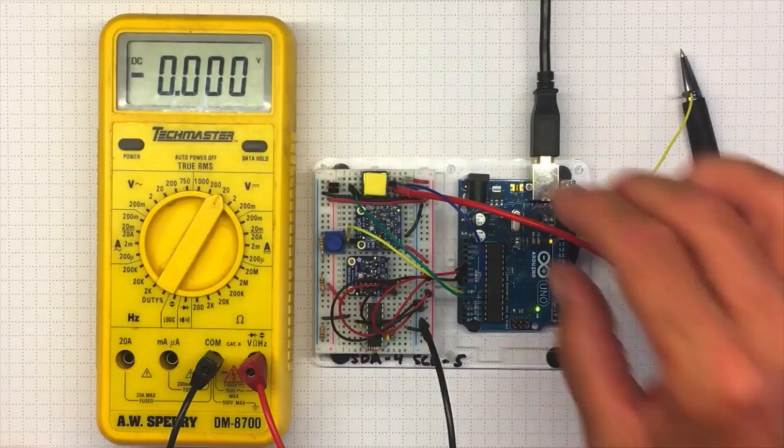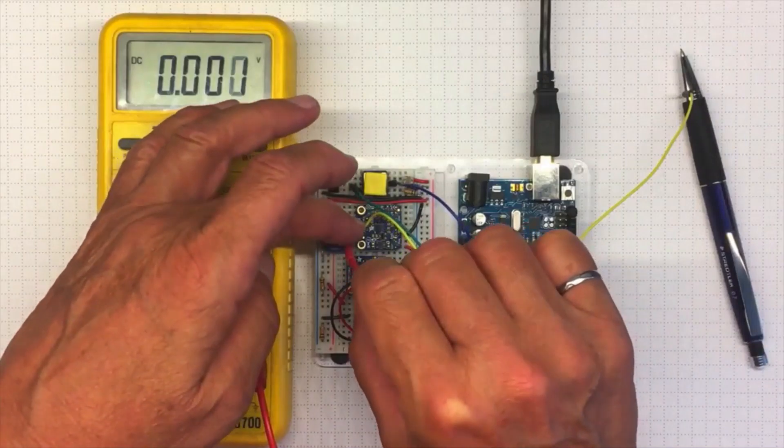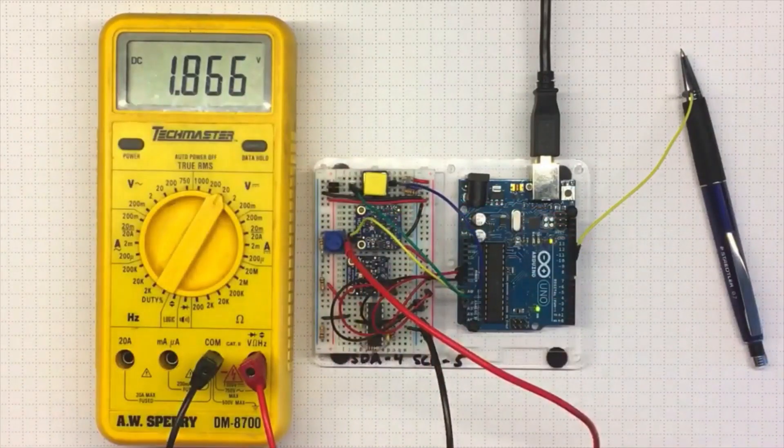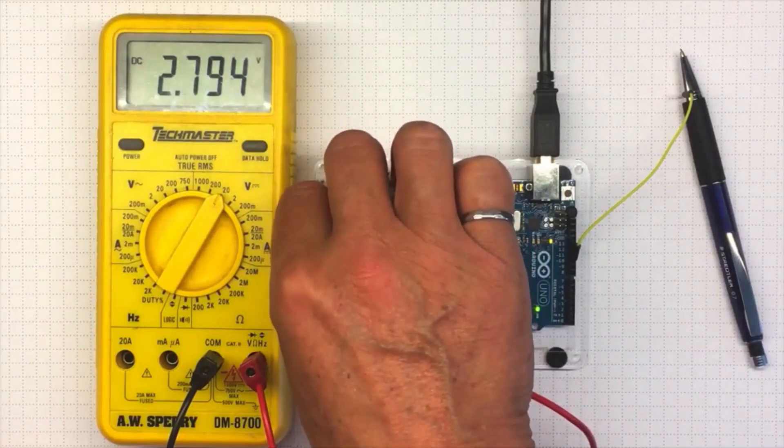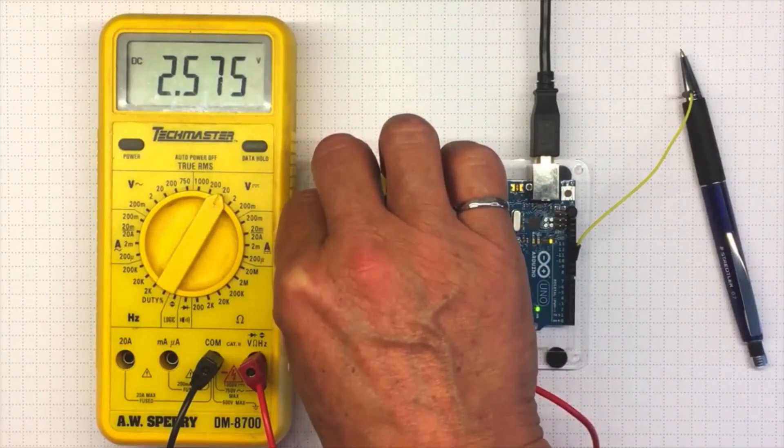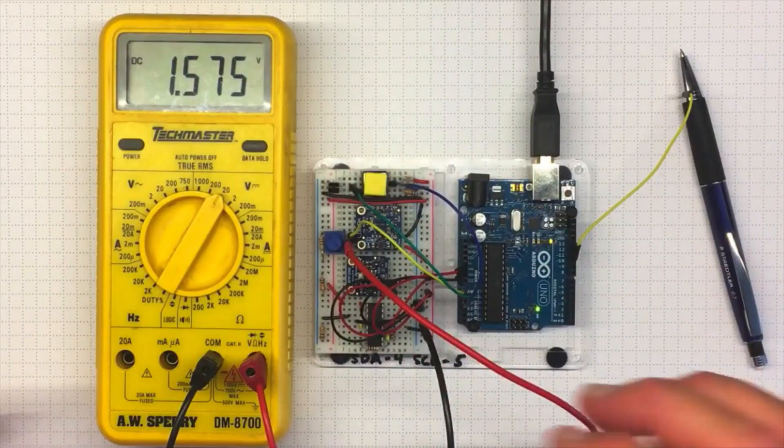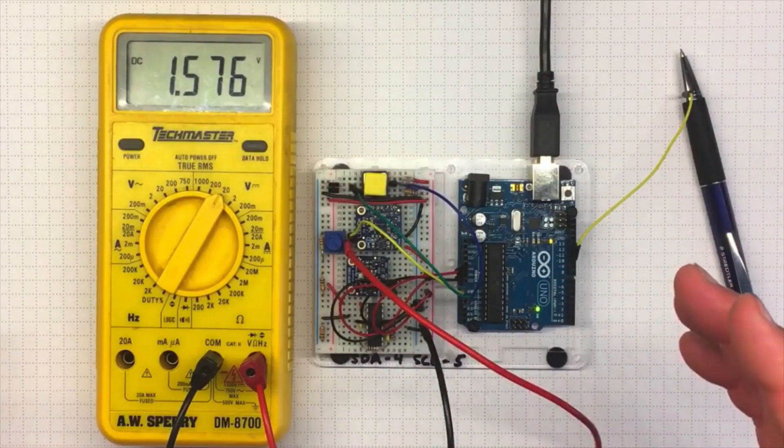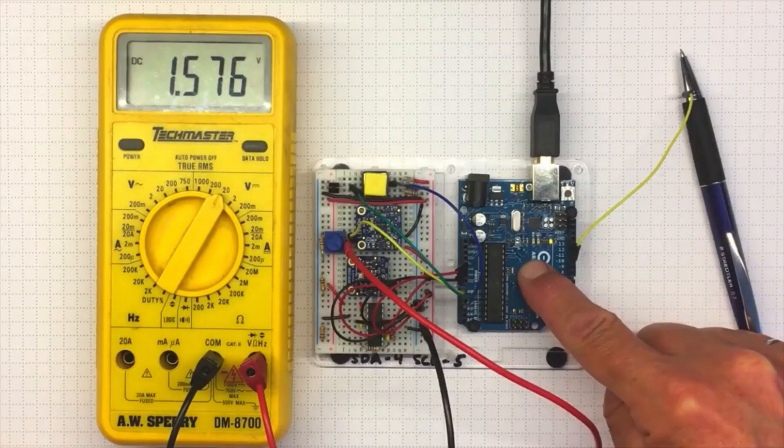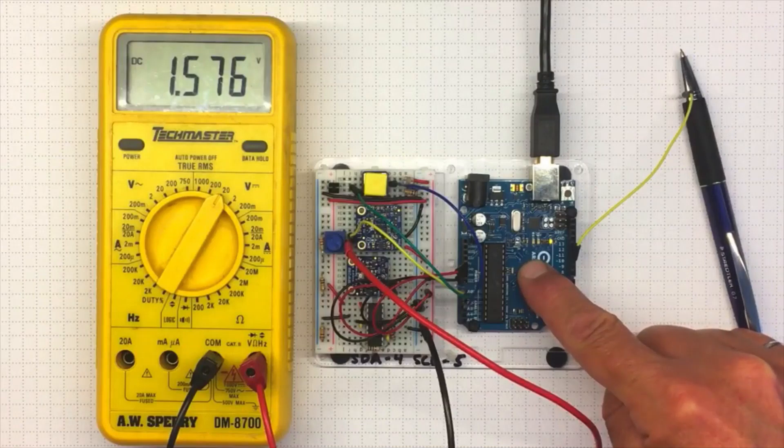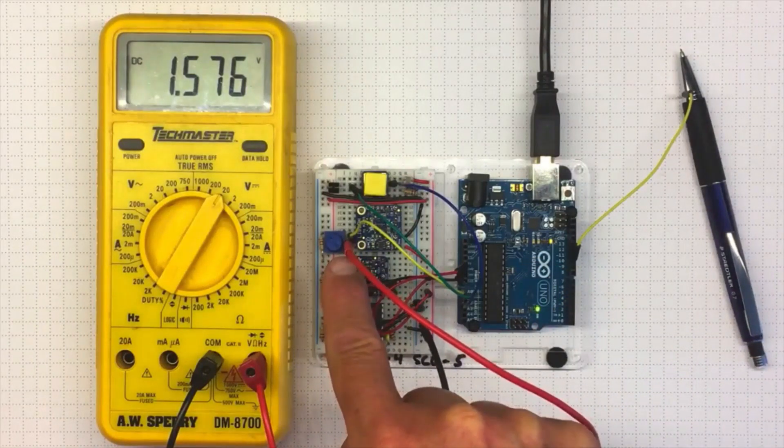For an analog signal, I've got this potentiometer, and it gives me a voltage output that I can adjust and vary depending on what I'd like to get. I can get values anywhere from zero up to five and anything in between.